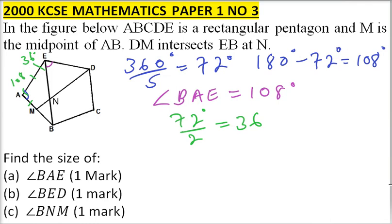Now, from there, we have this angle. If this angle is 36, then it means that since angle AED is 108, it means angle BED is equal to 108 degrees minus 36. And that should give you 72 degrees. So that is the second angle.